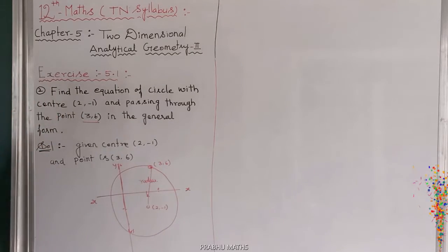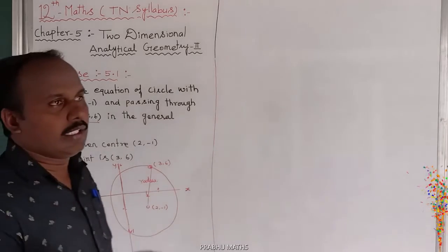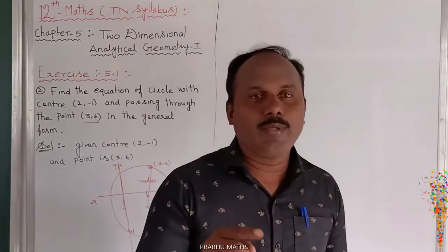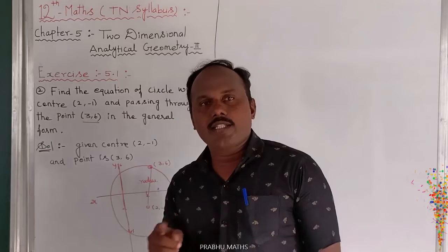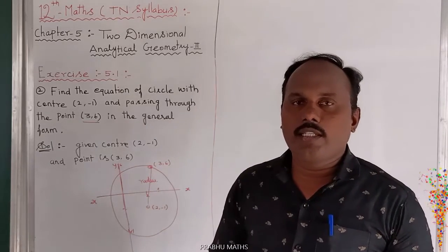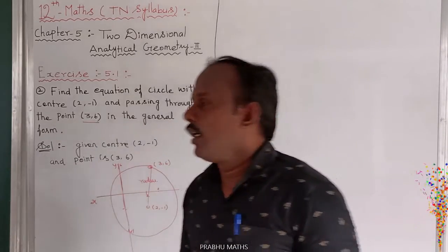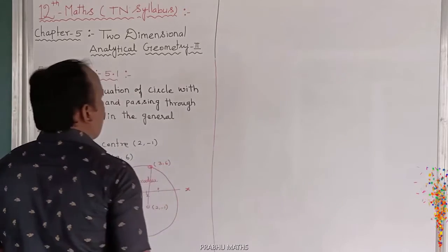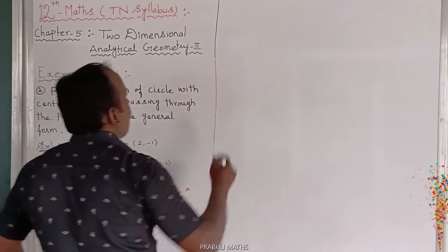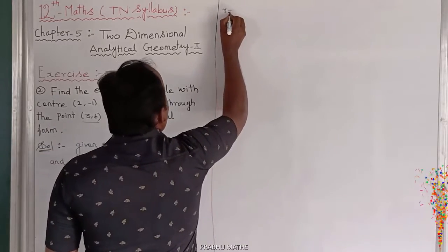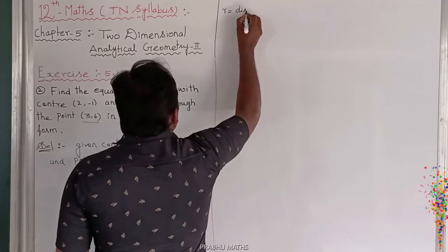To find the radius, we use the standard circle formula: (x - h)² + (y - k)² = r². Here r² means the radius squared, so we need to find the radius value r.